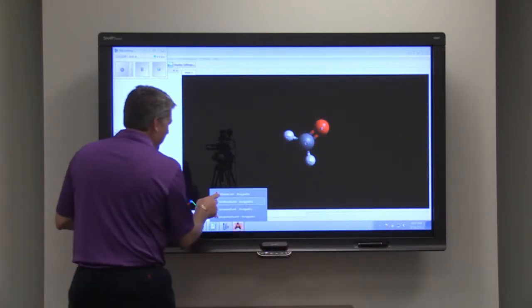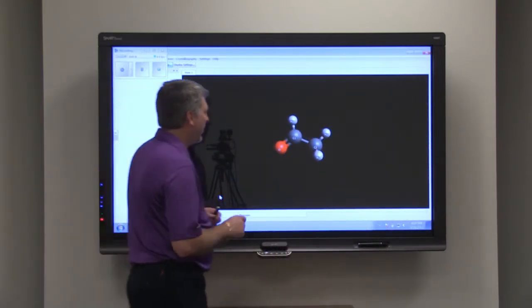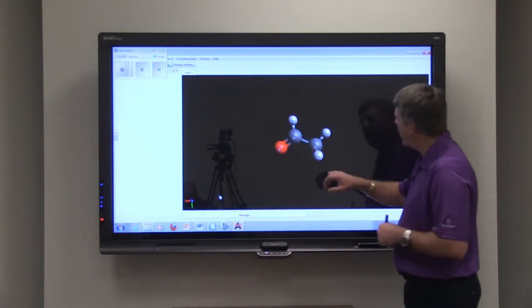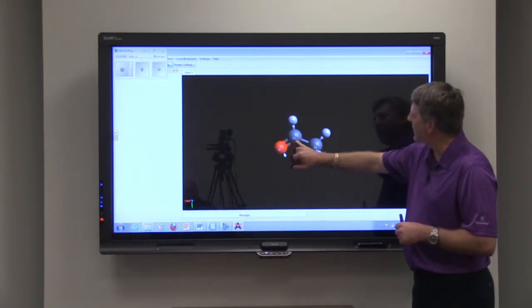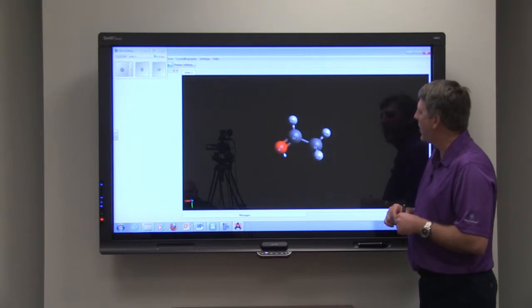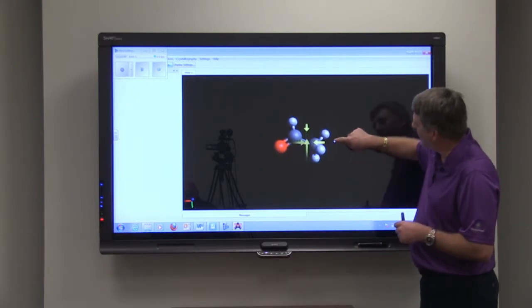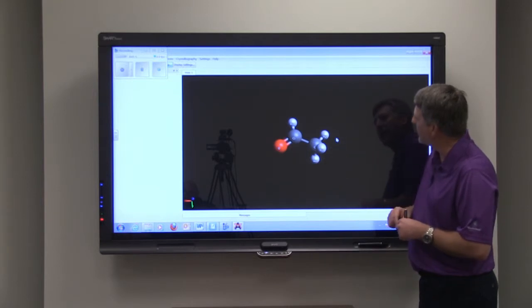Next would be ethanal, and with ethanal we have our double bonded oxygen attached to a carbon, and then you can see our second carbon has its regular three hydrogens attached.